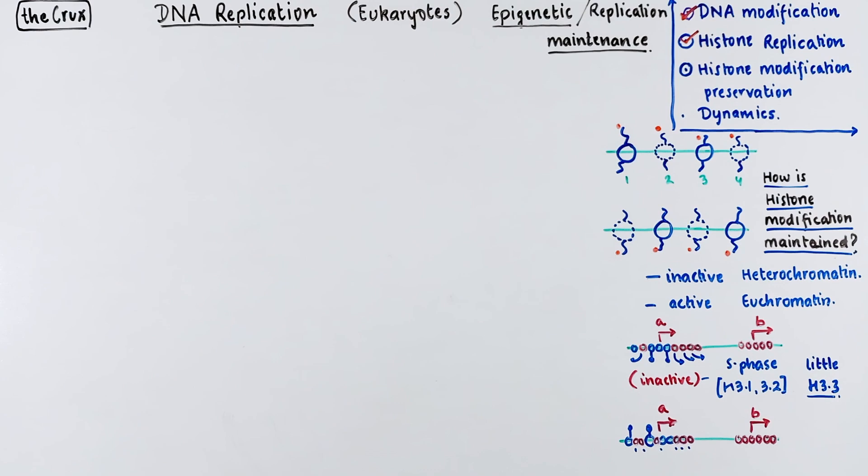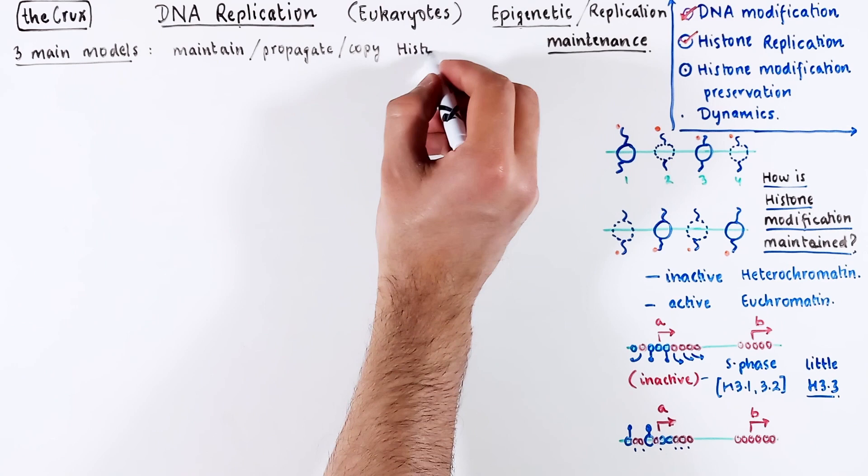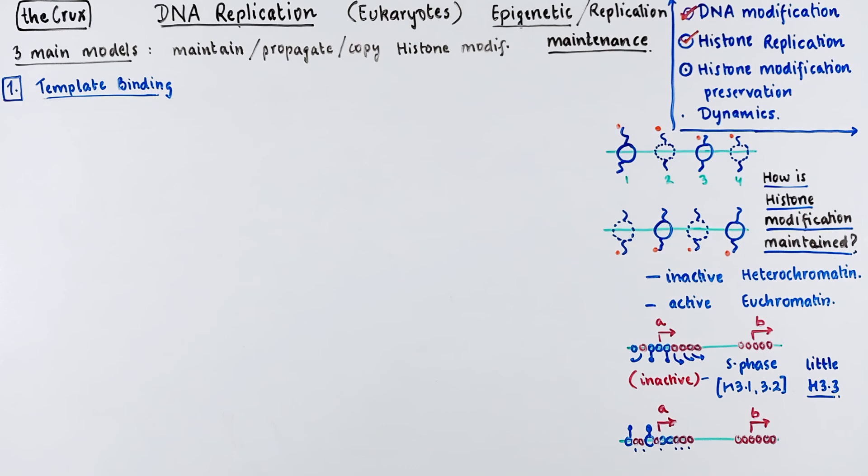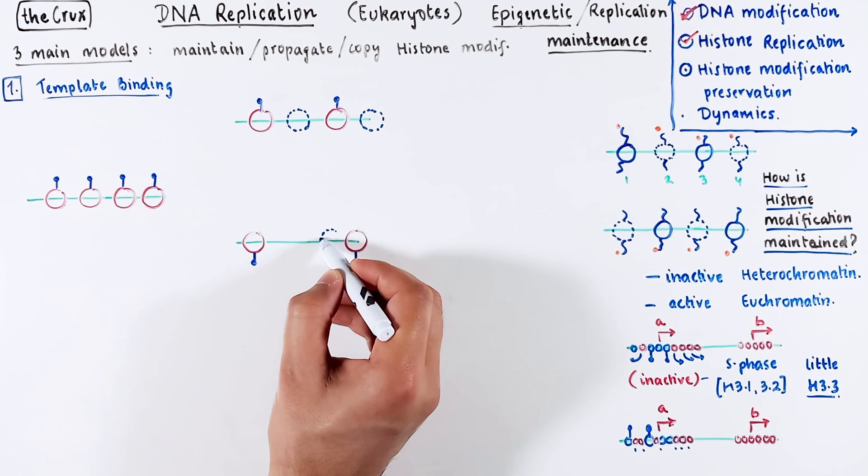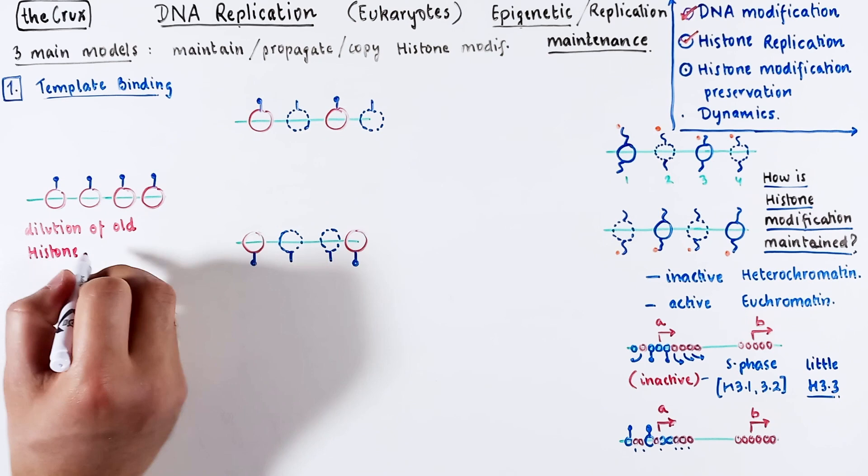There are three main models to explain the maintenance, propagation, or copying of histone modifications. The first is the template binding model. Let's begin by drawing out the simple schematic of unbiased histone distribution. Now, new histones are added to the daughter DNAs which do not have any modifications on their tails. The old histones will retain the modification because of the unbiased dilution or distribution that we have discussed earlier.